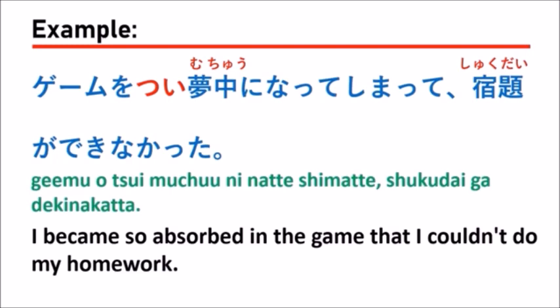You do something that you don't pay attention to, but it's still a mistake. So you can use the grammar of つい to help explain the situation like this in Japanese. And remember, after つい, the clause should be in the て-form. So don't forget.